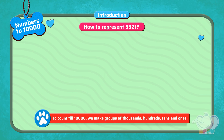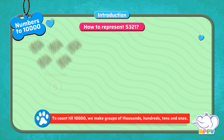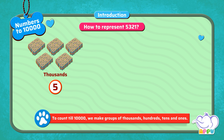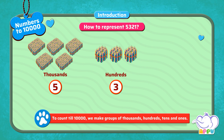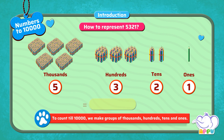Let's see one more example for the number 5,321. For this, we have five groups of 1,000 pencils, three groups of 100 pencils, two groups of tens, and one pencil. We have five thousands, three hundreds, two tens, and one ones.